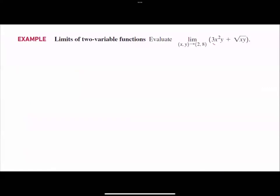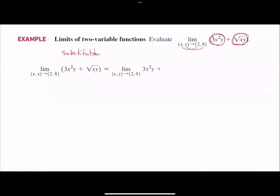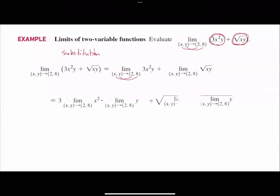Consider the function in two variables x and y: 3x²y + √(xy). You want to find the limit as x goes to 2 and y goes to 3. The first thing you do is substitution — 3x²y is a nice polynomial term and √(xy) is a nice function. By substitution, plug in 2 for x and 3 for y. It becomes 3 times 4 times 3 plus the square root of 2 times 3.